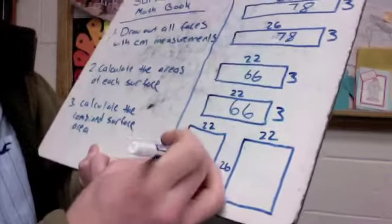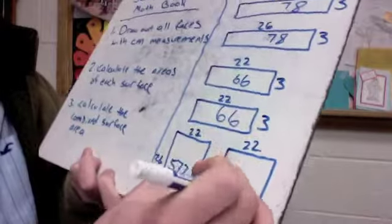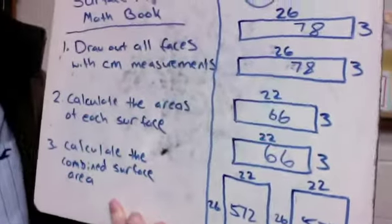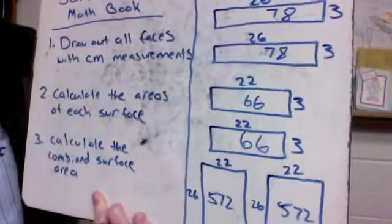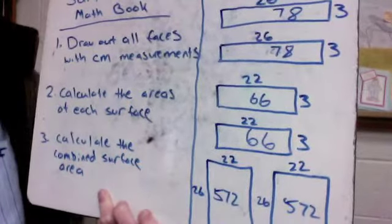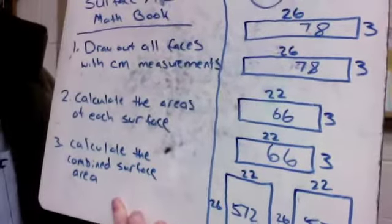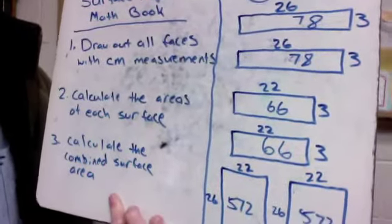Now to find the combined surface area, to figure out how many of those square centimeters would fit along all the surfaces, I just need to add everything together.